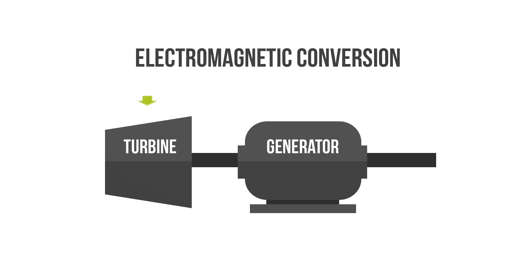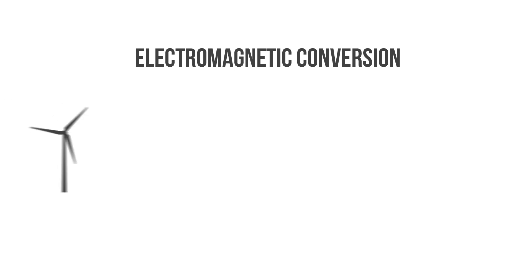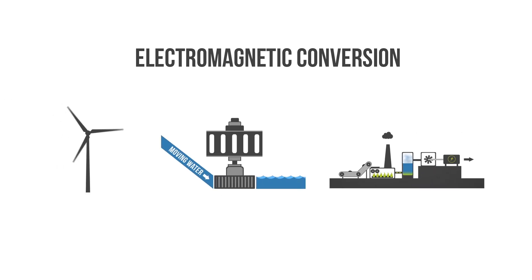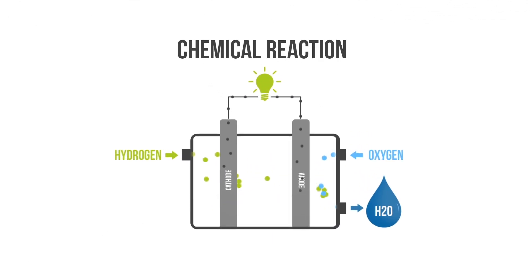This energy for motion can come from various technologies, for example wind turbines, hydro, or the steam created from heat produced in nuclear fission or coal combustion. Electricity can also be created through a chemical reaction. An example of this is a battery or a fuel cell.